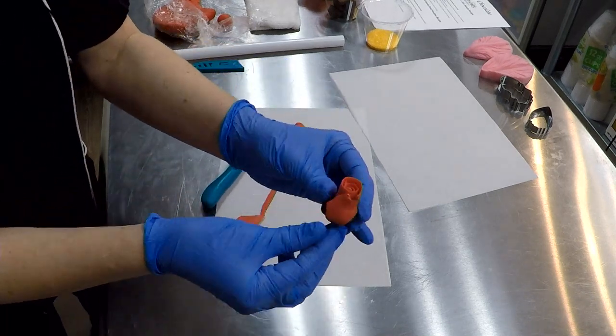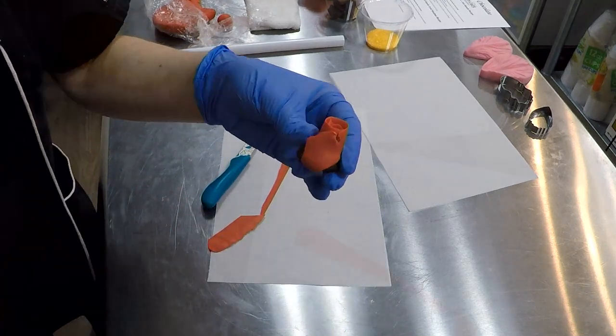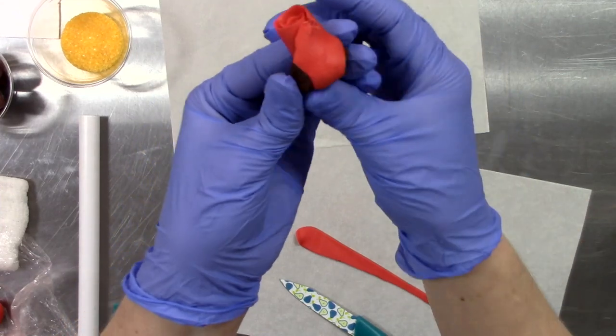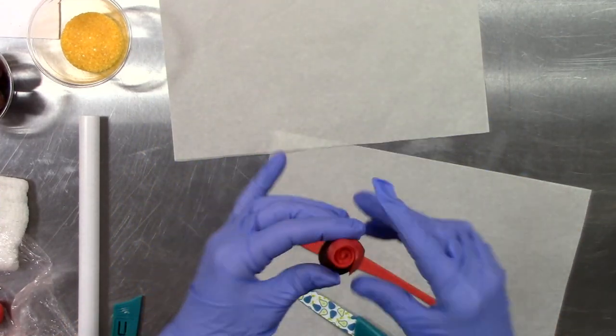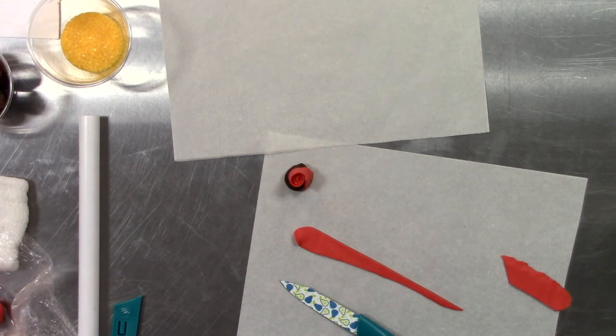Cutting off the extra, I just need a little bit of a tail to make it adhere to the chocolate truffle. Putting it right on top of the chocolate truffle and wrapping that tail to the underside, that becomes the very top of our rose.